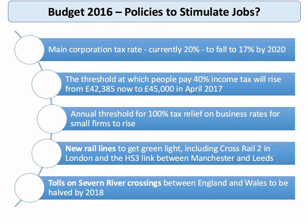Small businesses have been given some help: the threshold for tax relief on business rates has gone up, and small businesses now have a national insurance contribution discount if they employ a long-term unemployed worker. The government is also trying to fast-forward infrastructure investment — it's likely that Crossrail 2 will go ahead, probably before HS2. And the HS3 high-speed rail link, the Northern Powerhouse Project, is looking pretty good.